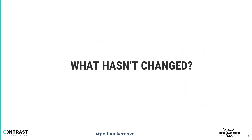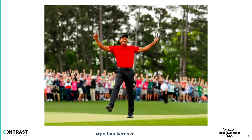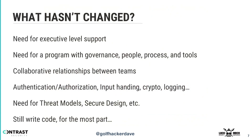So what hasn't changed in AppSec? Well, old things still work. We still need exec-level support — hands down, they're the ones paying the paychecks. We still need programs with governance: people, process, tools. That's something that won't change. Collaborative relationships — we're getting better at that. Specific things to different control areas still exist. Some frameworks, some tooling may make them easier, but those things are still issues we have to think about.